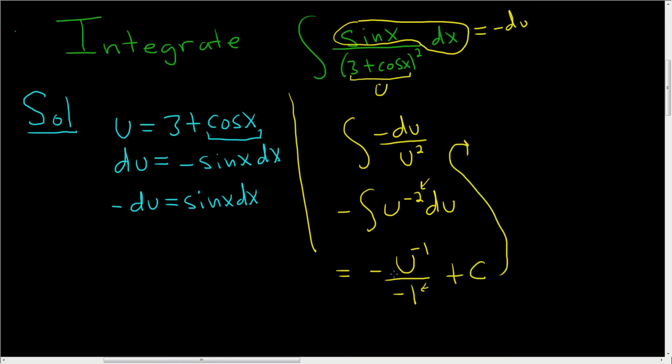This is equal to, well, negative and negative is positive, right? We have two negatives. So we get 1 over u, but u was 3 plus cosine x. And then we still have our arbitrary constant, plus c. And that's it.